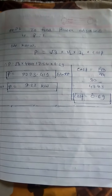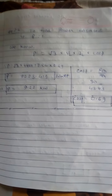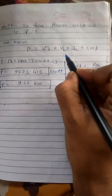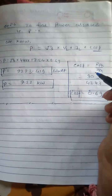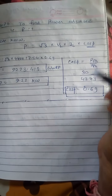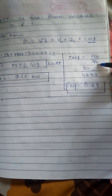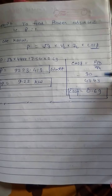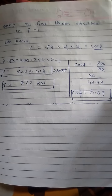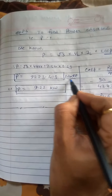Step 6 is power absorbed by the load, or power consumed by the load. The formula is P = √3 × VL × IL × cosφ. We need the power factor cosφ = RPH / ZPH = 30 / 43.43 = 0.69. Substituting all values, we get the power absorbed by the load in watts.